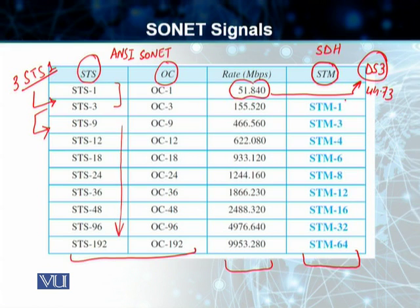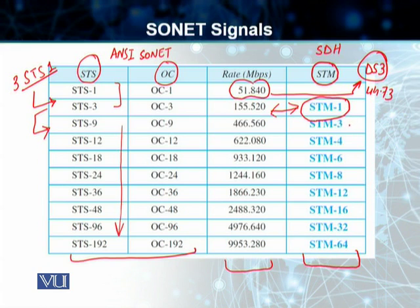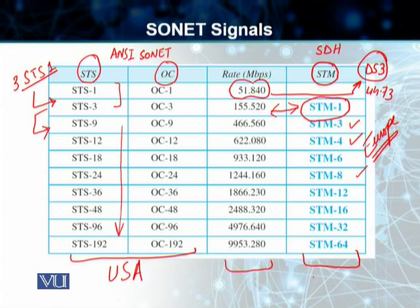In ITU-T language, the STM-1 standard — the minimum unit of the SDH system — corresponds to STS-3 and has a data rate of 155.52 megabits per second. From there, STM-3 is equivalent to STS-9, STM-4 is equivalent to STS-12, and so on. This SDH standard is used in Europe, while the ANSI SONET standard is used in the USA.